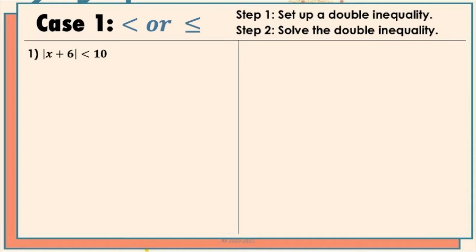Now let's have the first example. We have the absolute value of x plus 6 is less than 10. For the solution, we're going to set up the double inequality, so we have x plus 6 is less than 10 but greater than negative 10. You would notice that there are already three sides in the given inequality. Our next goal is to make sure that the variable in the middlemost section is isolated, so we have to remove the positive 6 by adding negative 6 on all sides.